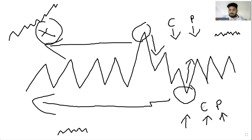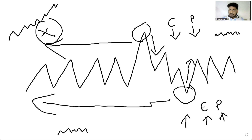So it's very simple: whenever the IVs are at the top, I will prefer short volatility trading strategies like short straddles, short strangles, iron condors, and short iron butterflies. Whenever the IVs are at the bottom, I will prefer long volatility opportunities — long straddles, long strangles, long calls, and long puts. I will prefer buying options when IVs are at the bottom and prefer option selling strategies when IVs are at the top.